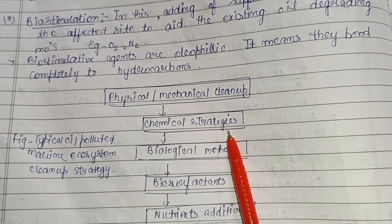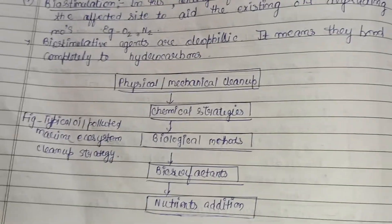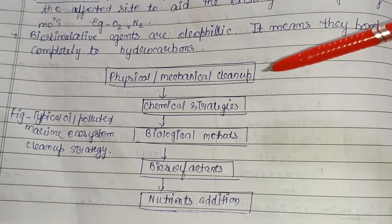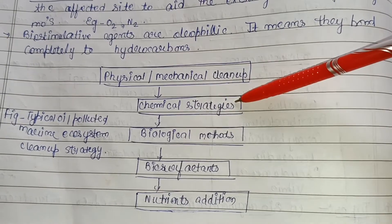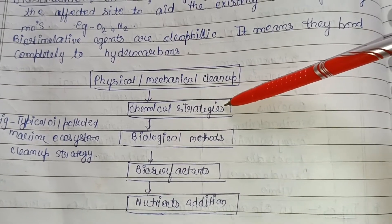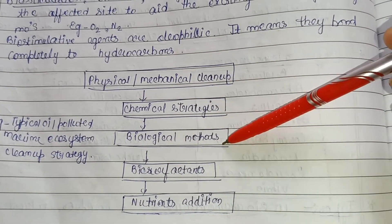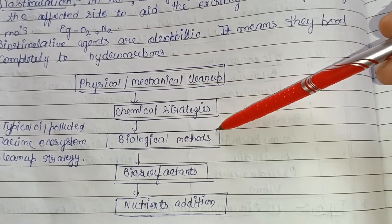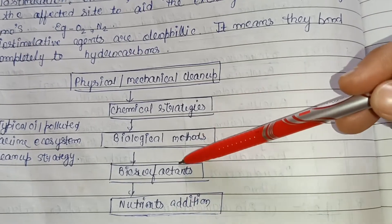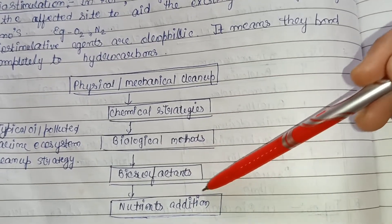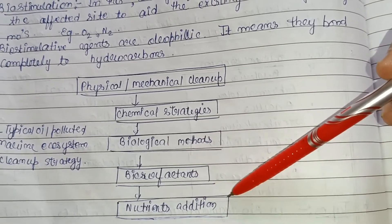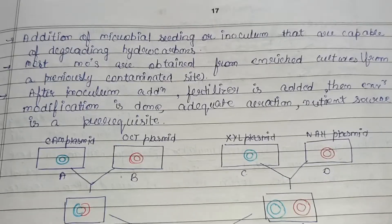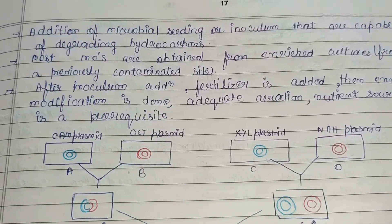The typical cleanup strategy for an oil-polluted marine ecosystem involves: first, physical or mechanical cleanup; then chemical treatment; followed by biological methods — that is, introduction of microorganisms; then biosurfactants; and finally nutrient addition, which is bio-stimulation.